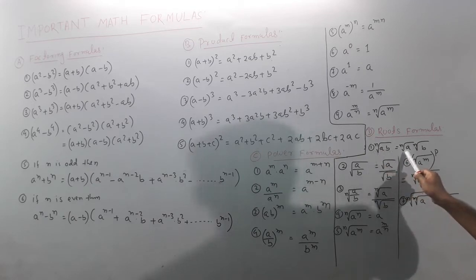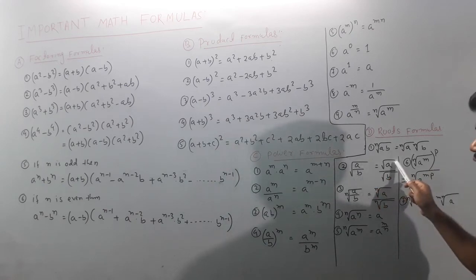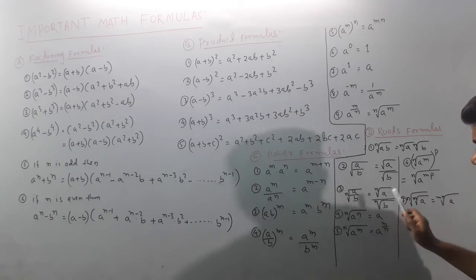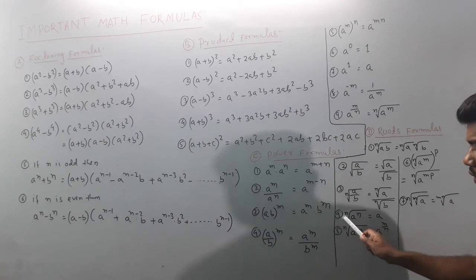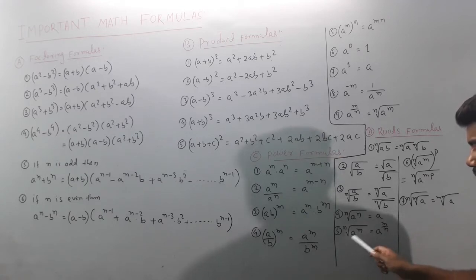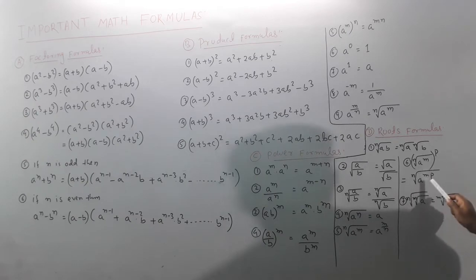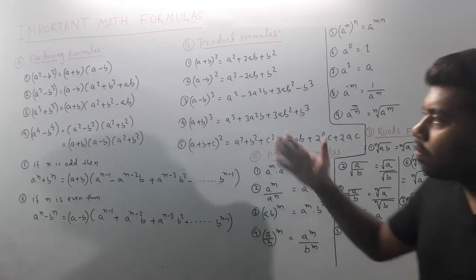For the roots formula: the nth root of y is y to the power 1/n. The nth root of yᵐ is y to the power m/n. The nth root of (aᵐ, whole to the power p) gives aᵐᵖ/ⁿ. And the square root of mn equals the square root of m times the square root of n.